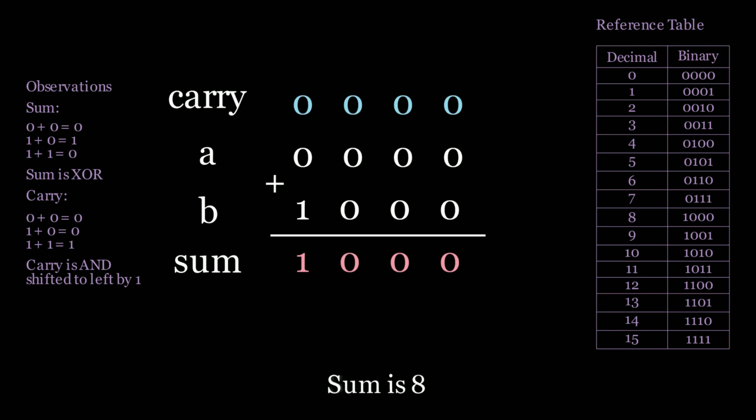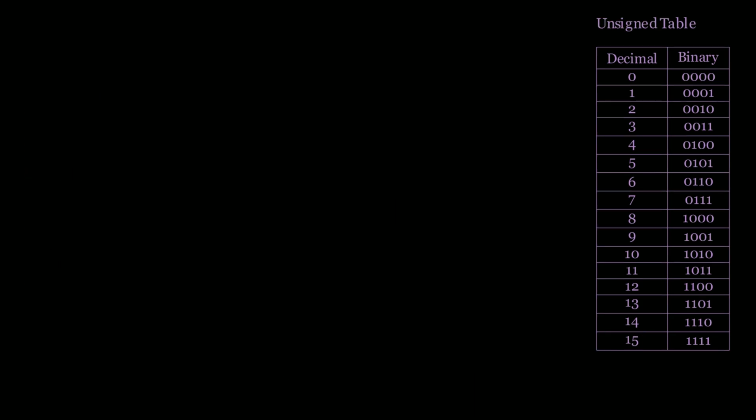The time complexity is O(32) because an integer has 32 bits, so we run through the algorithm at most 32 times — that's constant time. Space is also constant because we're not storing anything extra.